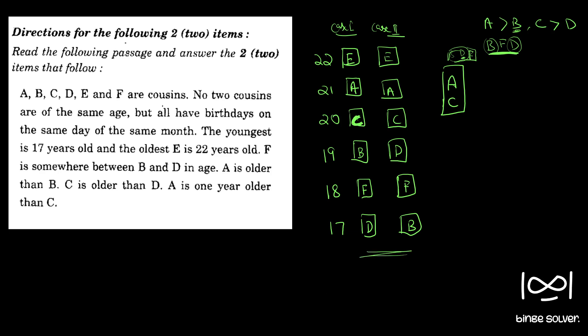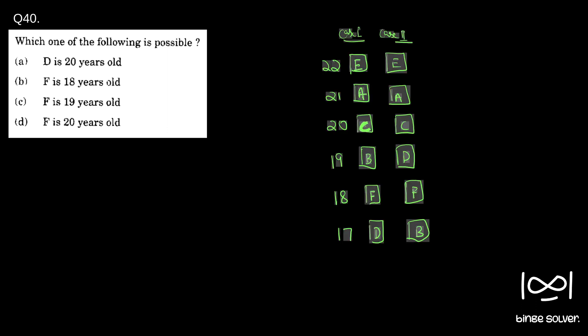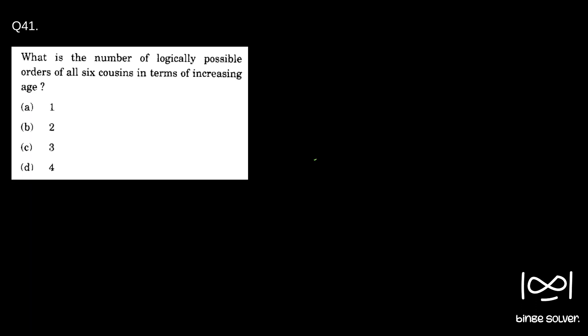So now we will solve the problem. I'll just copy this so that we can use it in the questions. So we'll go to question 40: Which one of the following is possible? Well, we have two cases with us. If you see, they are asking D is 20 years old. So in the first case, D is 17 years old. In the second case, D is 19 years old. So that cannot be an answer. So A is not an answer. F is 18 years old. In both cases, F is 18 years old. So we can say option B is correct. Option B is correct. F is 19 years old is wrong. F is 20 years old is wrong. So solution to question 40 is B. We'll go to next question.